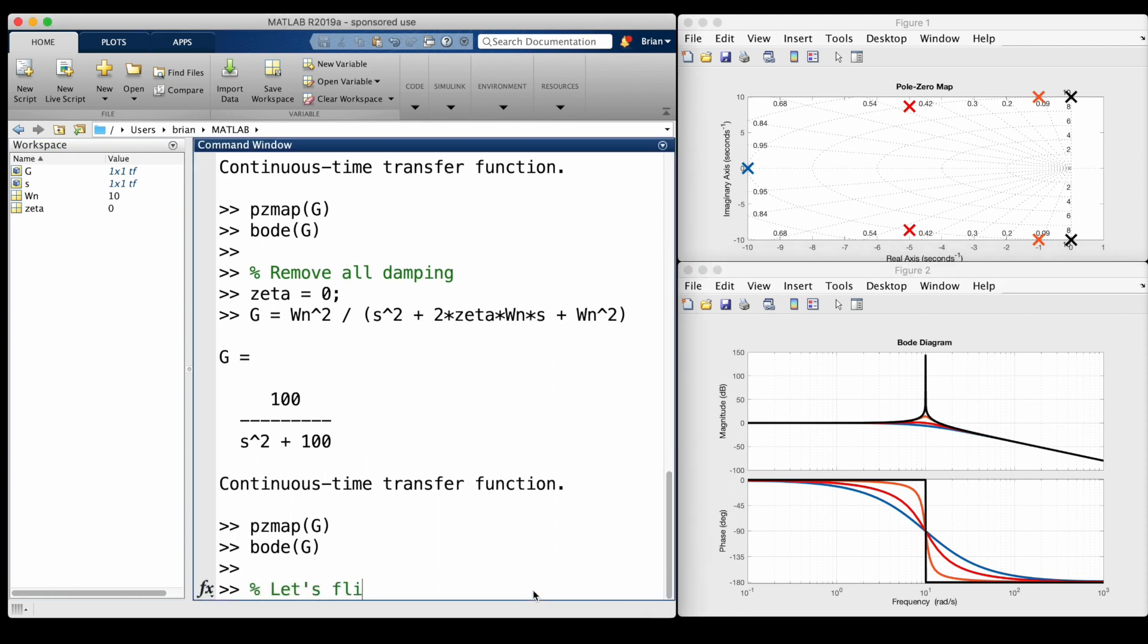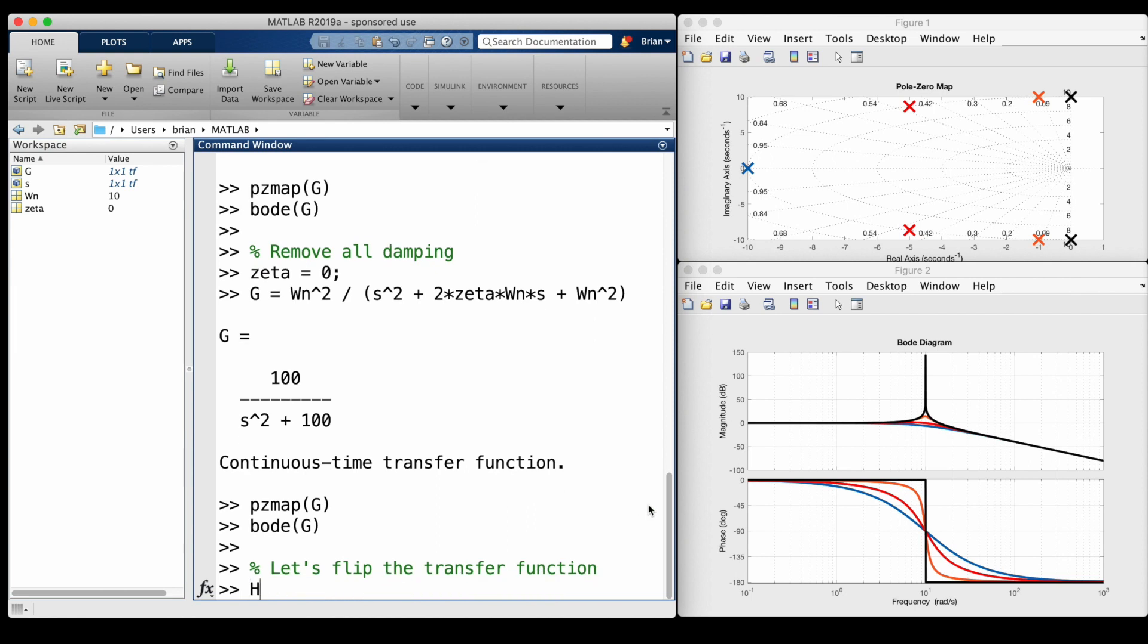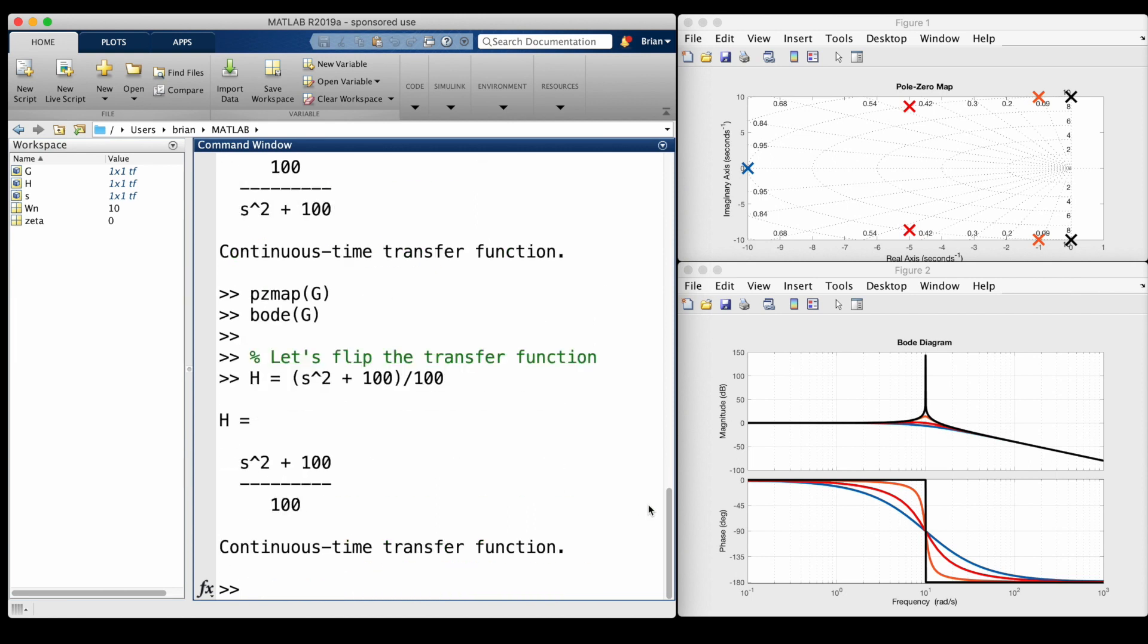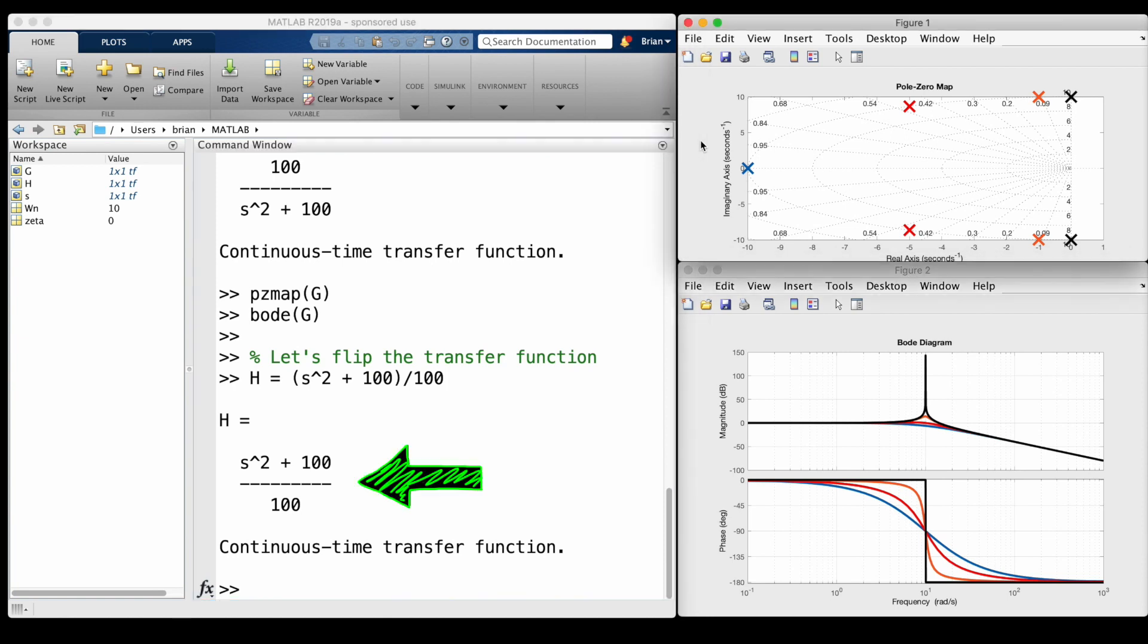What we can do is flip this response upside down by inverting the transfer function. So now instead of two poles on the imaginary axis, we'll have two zeros, and our transfer function will be s squared plus 100 divided by 100.